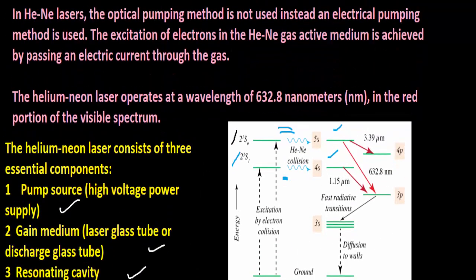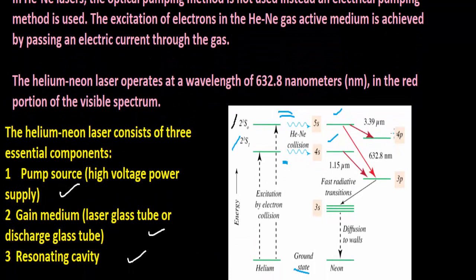After some time, this gas discharge process leads to population inversion between 3s and 3p, and also between the levels of 2s and 2p in the neon atoms. There is a higher probability of level 3s being more populated, so by continuous discharge this orbital gets more populated.